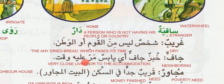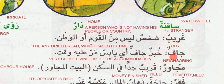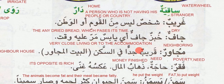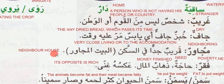Jaaf means dry. Khabuz jaaf — he ye yaabis. Mur alayhi waqt — any dried bread which has passed its time, meaning expired. It becomes hard and we cannot eat it easily. Mujawaru means neighboring. Mujawar means neighboring — qariib jidden, very close living, or to the accommodation. Very much close to the house or staying place. Baith al-mujawar — neighbor's house.